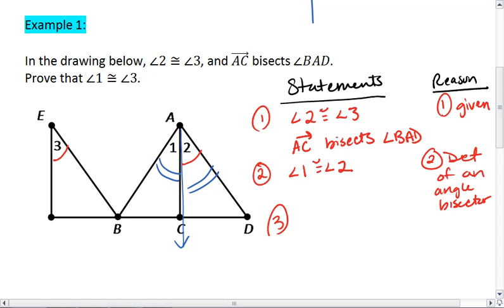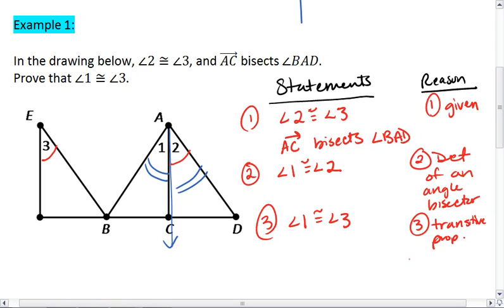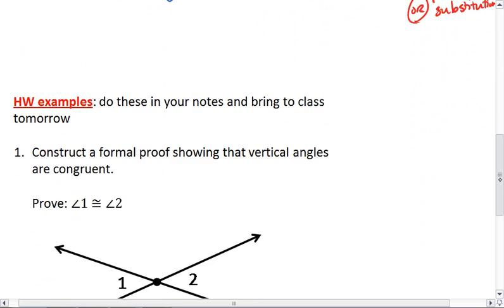Next, we can say that angle 1 is congruent to angle 3. This is either through the transitive property, or you could also write that this is through substitution. Notice that statement 3 is the statement we were trying to prove, so we are done. Not too bad.